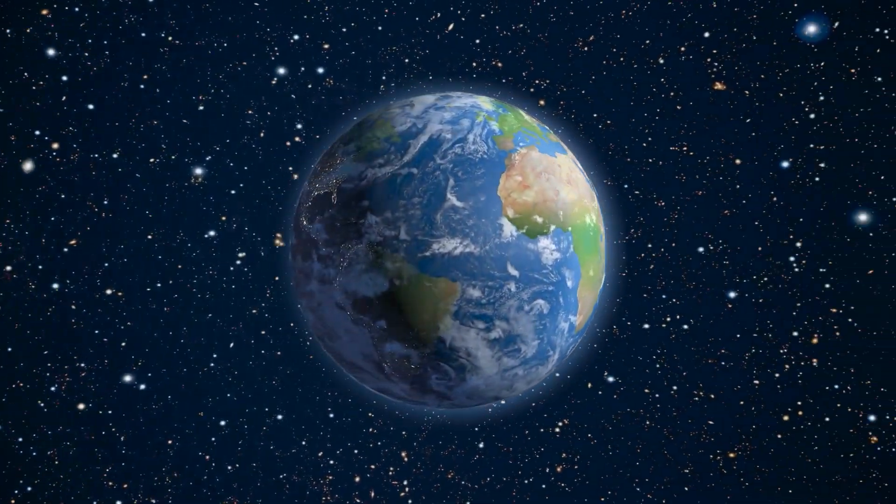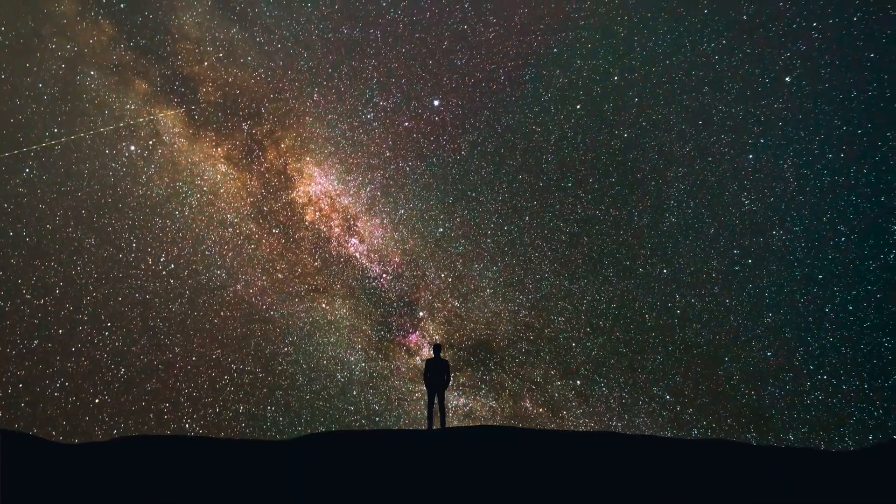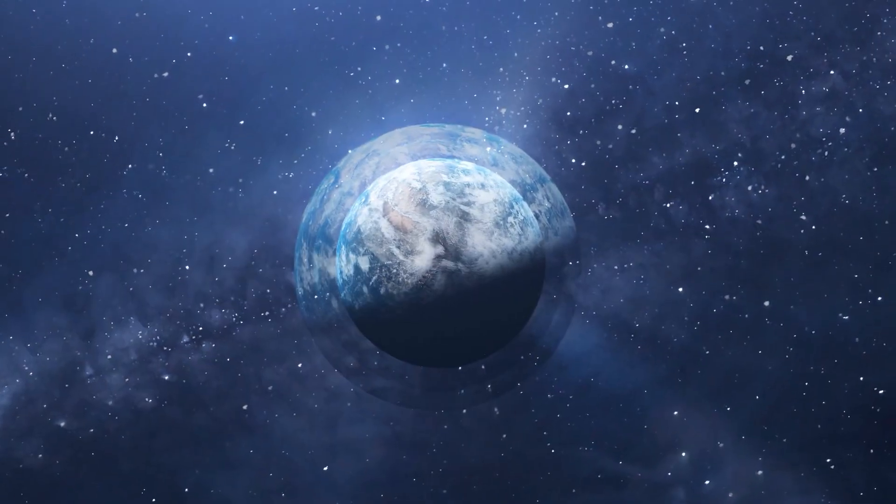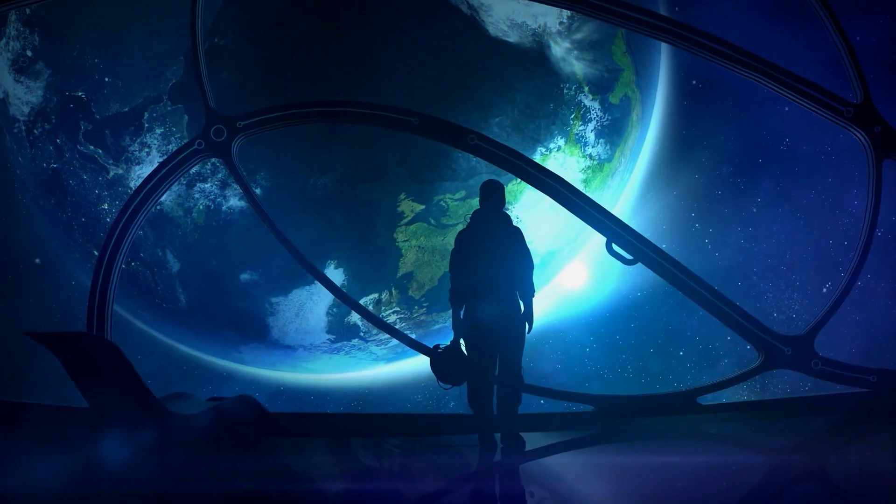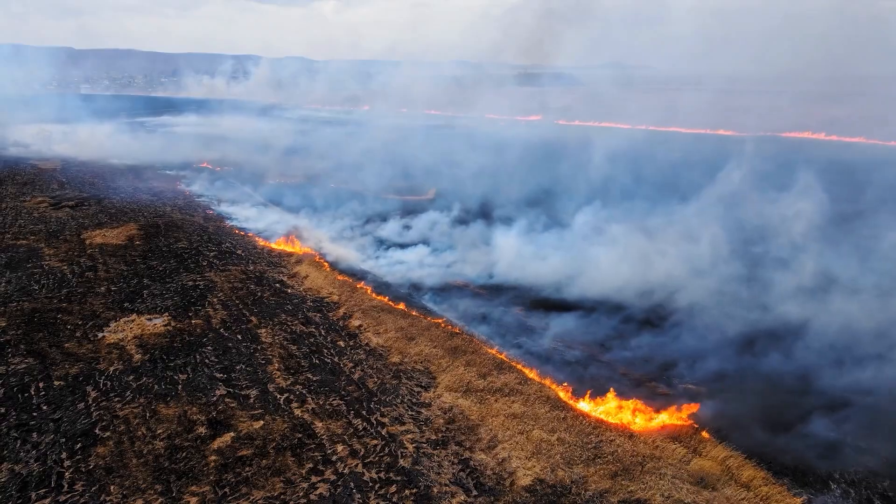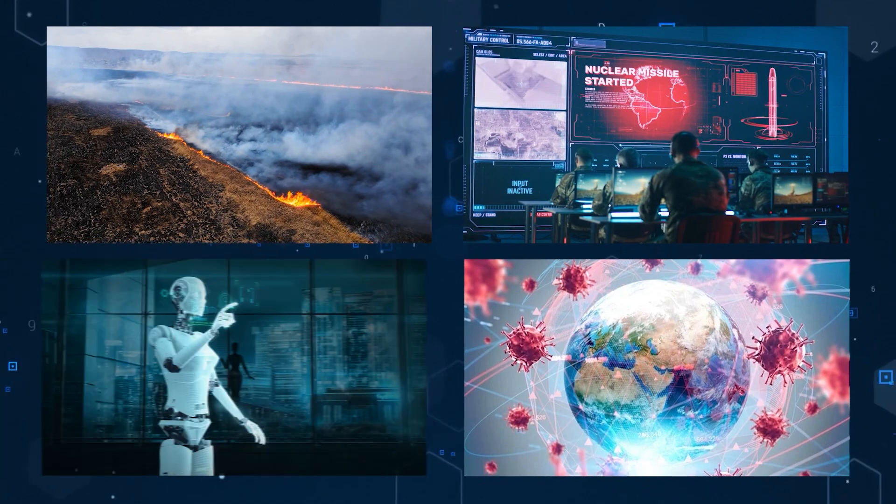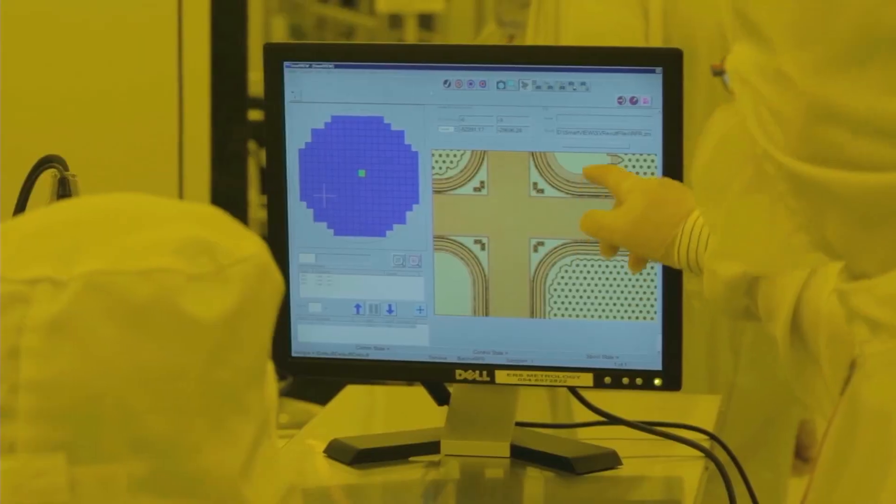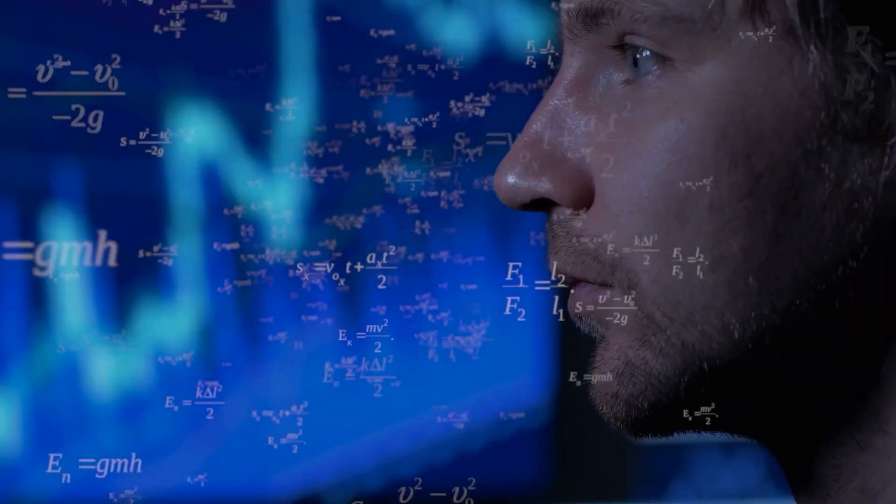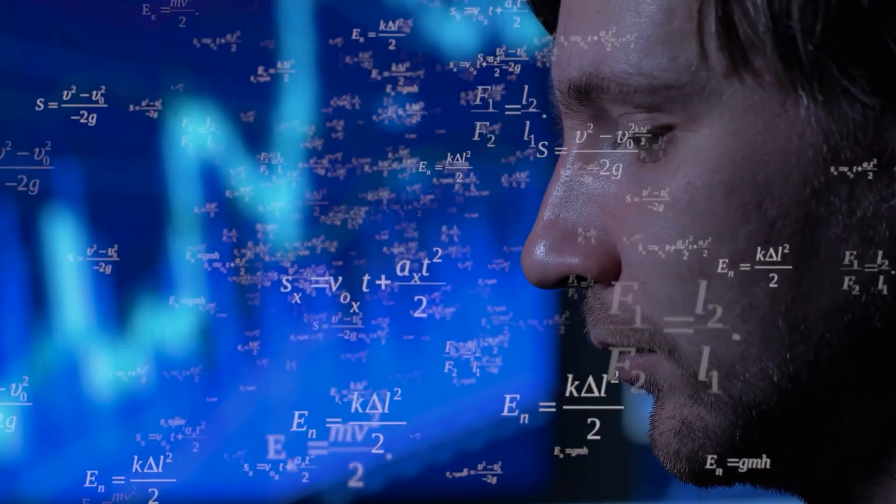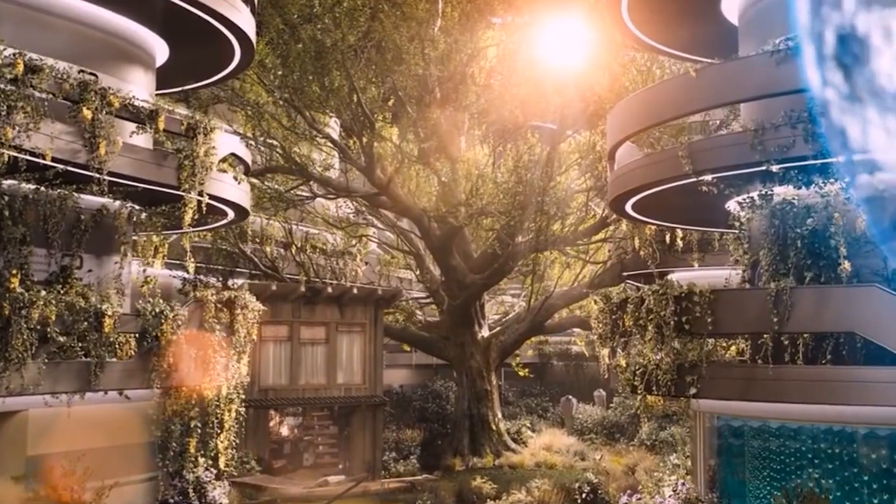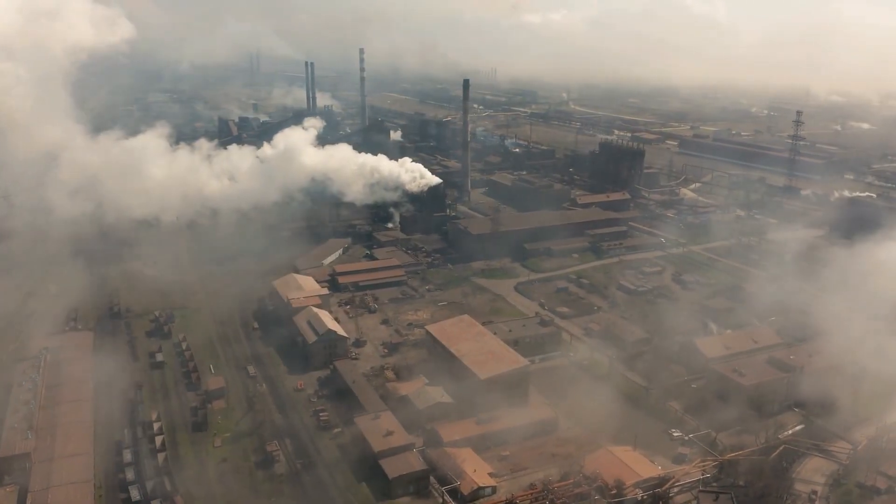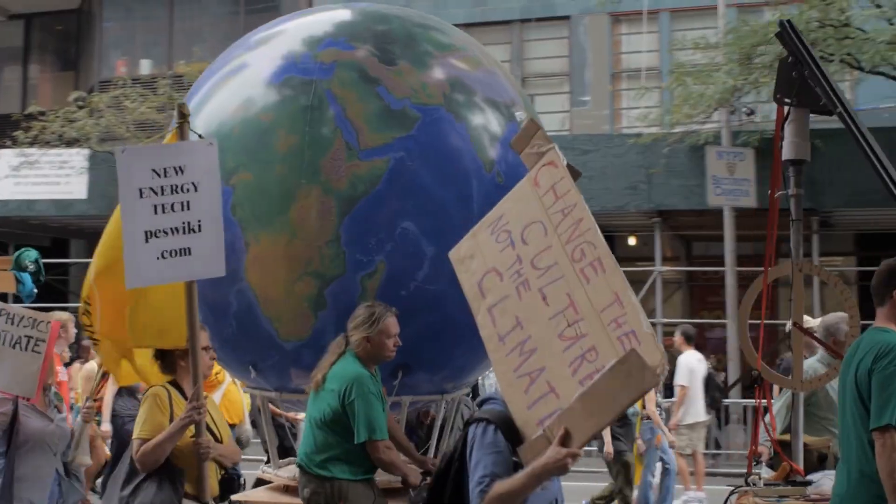Some people argue that the Great Filter isn't a done deal. It might still be lurking ahead of us. Why? Well, because as they say, intelligence can be a double-edged sword. It comes with its baggage of risks and challenges like climate change, nuclear threats, pandemics, AI gone wild, nanotechnology, you name it. And if that isn't enough, intelligence doesn't guarantee wisdom or morality. Take a look around Earth and you'll find plenty of examples. They claim that we are the result of a freak accident of nature that will soon correct itself.